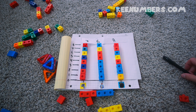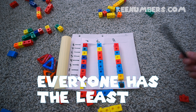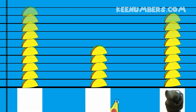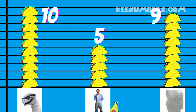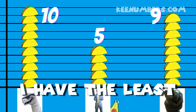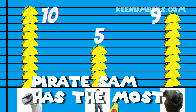Everybody has eight blocks - who has the smallest number of blocks? That's right - every single one of us. We all have eight - we each have the biggest number and we each have the smallest number in this example. But who has the most tacos? It looks like Pirate Sam has the most this time - he has ten tacos. I on the other hand only have five tacos, and the Greater Gator, as hungry as he gets, only has nine tacos. So the Greater Gator in this particular example does not have the most - in fact I have the least. I have five, Pirate Sam has ten tacos, and the Greater Gator has nine tacos.